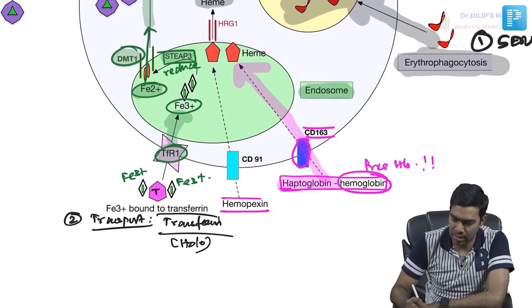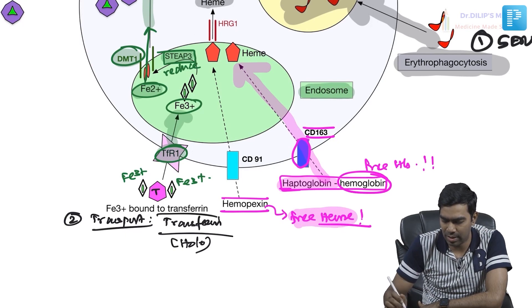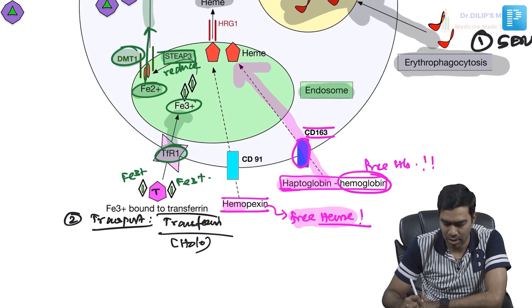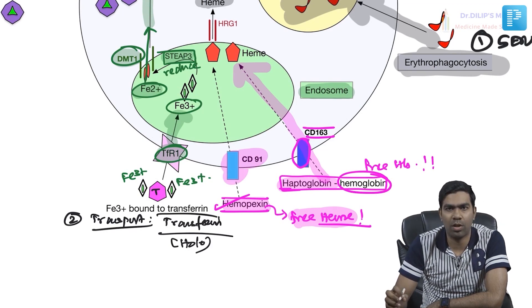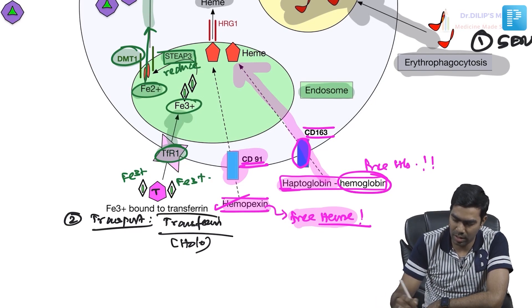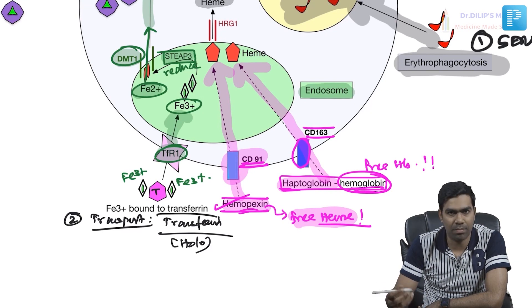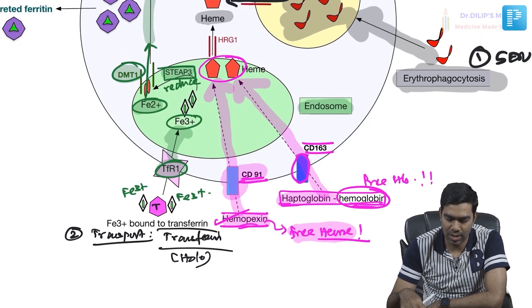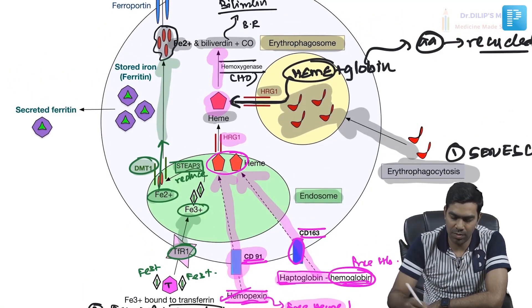Similarly, hemopexin is the protein that binds free heme — not free hemoglobin, but free heme — circulating in the blood. Hemopexin has the maximum affinity for heme of any protein in the body. This hemopexin-heme complex is recognized by a surface molecule called CD91, which transports it into the cell. It is taken up by the endosome, and ultimately both hemoglobin-derived and heme-derived iron form heme molecules, which are transferred out by HRG1 and then converted to Fe2+ via heme oxygenase.